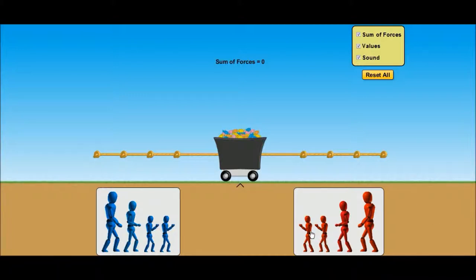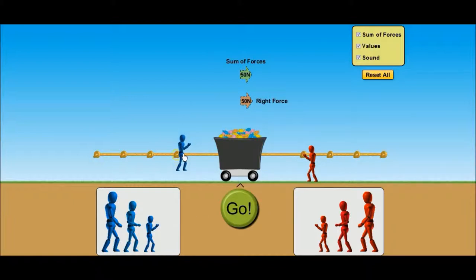So let's put some forces in here. So we've got a 50 Newtons force to the right and 50 Newtons force to the left. So the sum or the net force is going to be zero. So let's see what happens. Nothing at all.